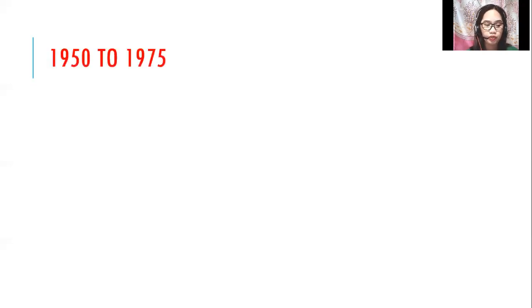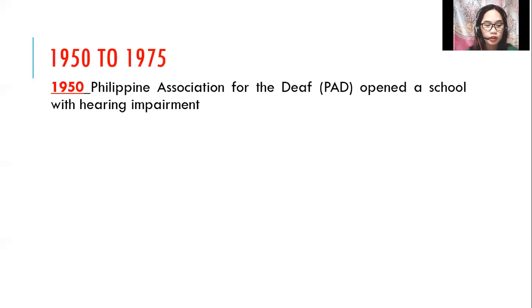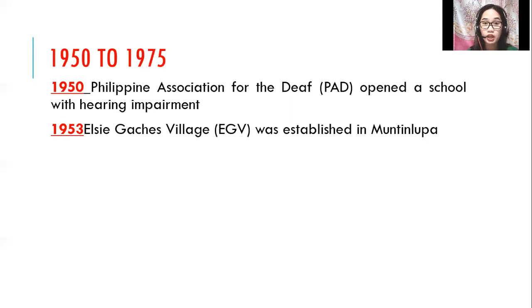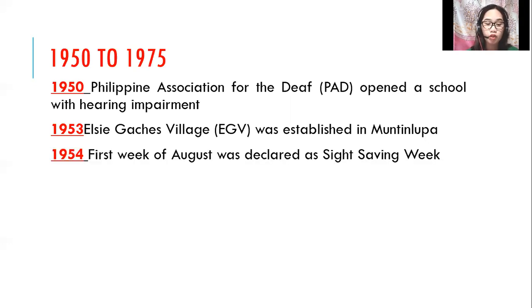Let's talk about the happenings from 1950 to 1975. In 1950, the Philippine Association for the Deaf opened a school for children with hearing impairment. The Elsie Gaches Village, or EGV, was established in 1953 in Alabang, Muntinlupa, Rizal, to take care of abandoned and orphaned children and youth with physical and mental handicaps. In 1953, the first week of August was declared a sight-saving week.